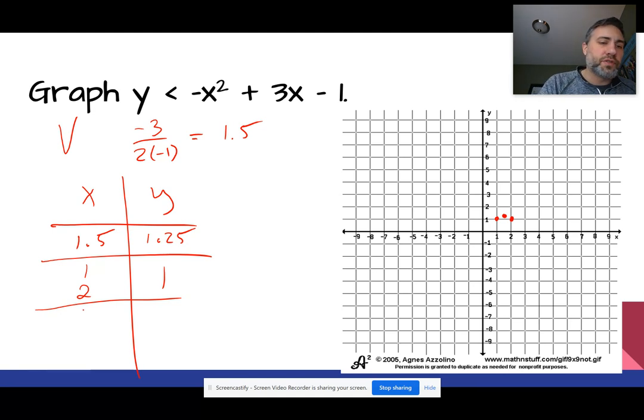And I might do one more here, so let's go 0 and 3. And if we plug a 0 in, it looks like we get a negative 1, and so that's what it's going to be. So 0, negative 1, and what's the other one? 3, negative 1, so it looks like this. Let's connect them. Actually, I'm not going to connect them yet.